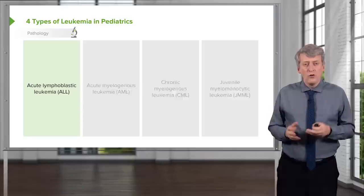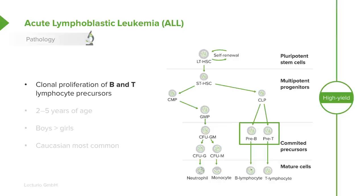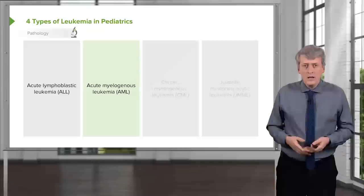By far and away, the most common types are the first two. First, we have acute lymphoblastic leukemia, or ALL, which is very common in kids. It's a proliferation of B and T cell lymphocyte precursors, like you can see here. It typically happens in children between the age of two and five, and again, boys a little more commonly than girls. Caucasians are at greatest risk for ALL.